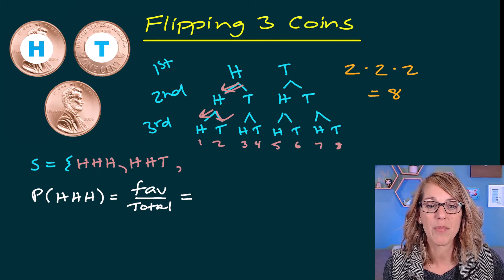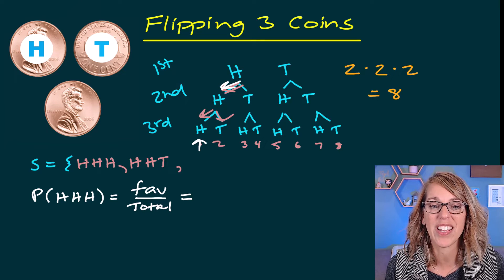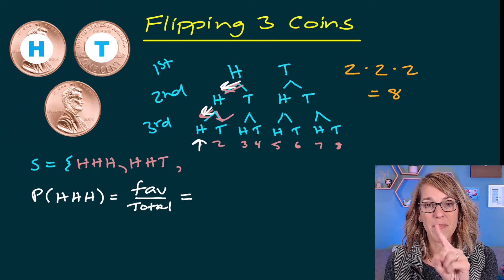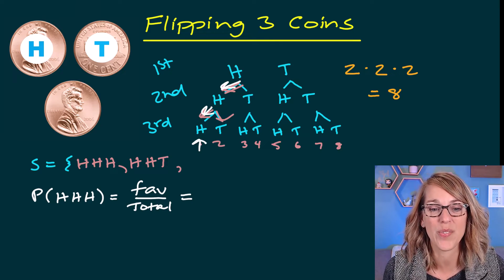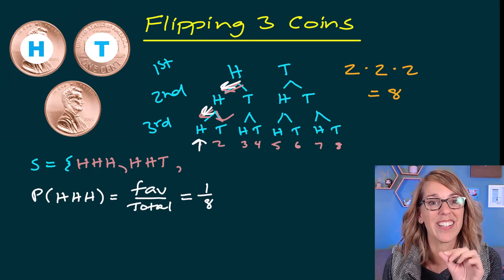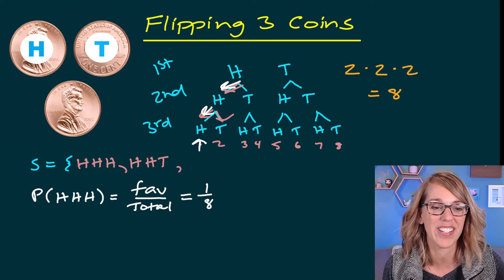My favorable outcomes are just this branching here, heads, heads, and heads. That's one outcome out of my eight total. So I end up with one over eight. You could also put this in your calculator to get a decimal form. If you wanted, I'm just going to leave them as fractions.